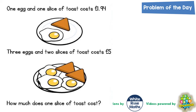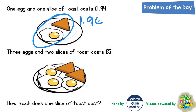Welcome, problem-solving fans, to another problem of the day — and this one's a good one to do over breakfast because it's all about eggs and toast. It says one egg and one slice of toast cost £1.94, and three eggs and two slices of toast cost £5. How much does one slice of toast cost?